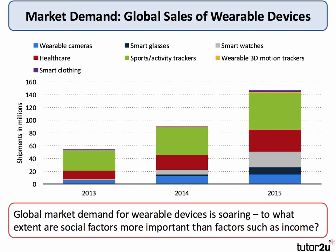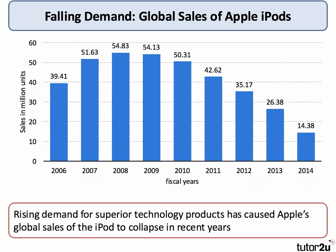Let's take some examples of where demand has been shifting. Here's an increase in the global market demand for wearable devices, including smartwatches. What's causing this? Clearly incomes have been rising and marketing has been very effective, so there's been a huge rise in global demand for wearable devices. On the other hand, the market demand for Apple iPods has been shrinking rapidly, particularly since 2009 to 2010, presumably because superior technology products have emerged. The market demand for this product has more or less collapsed.